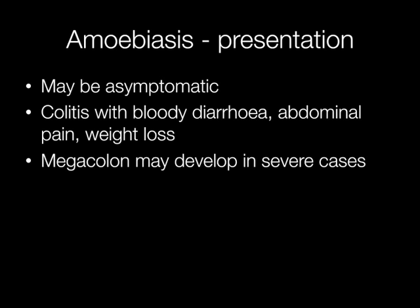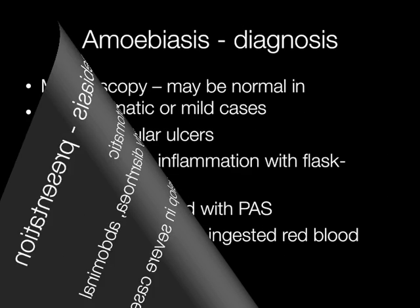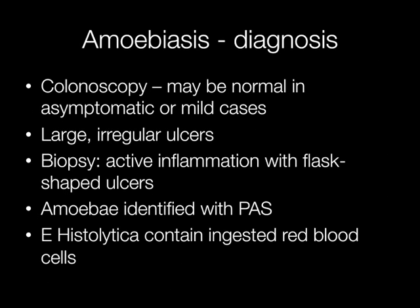Amoebiasis may be asymptomatic, but in colitis there is typically bloody diarrhoea, abdominal pain and weight loss. A complication of the colitis is megacolon, which can develop in severe cases. Colonoscopy may be normal in asymptomatic or mild cases, but in more severe cases there are large irregular ulcers, and biopsy reveals active inflammation with typically flask-shaped ulcers.